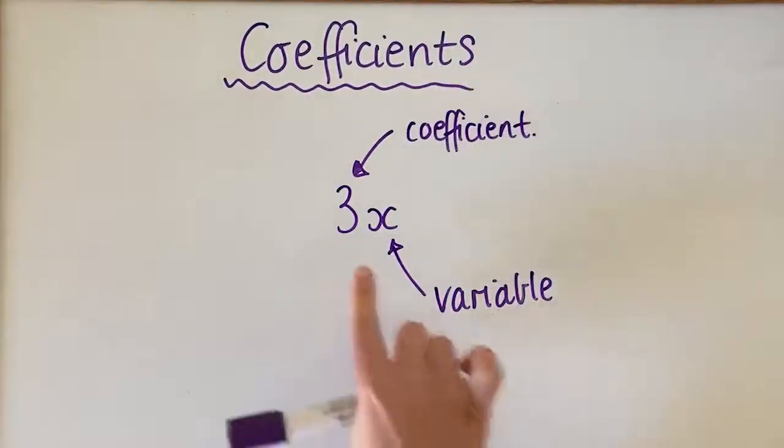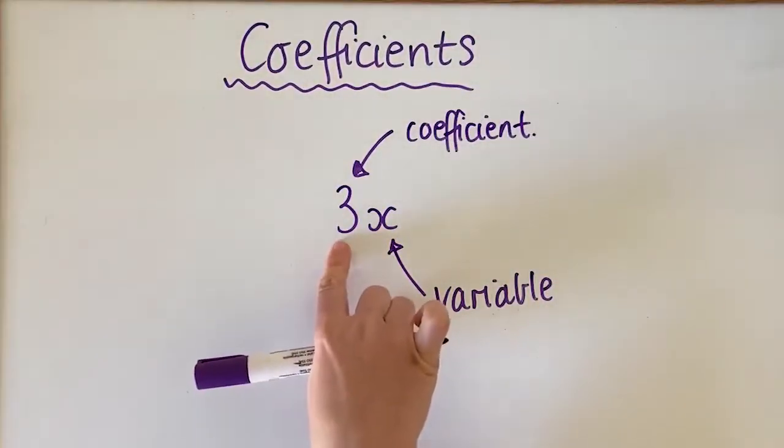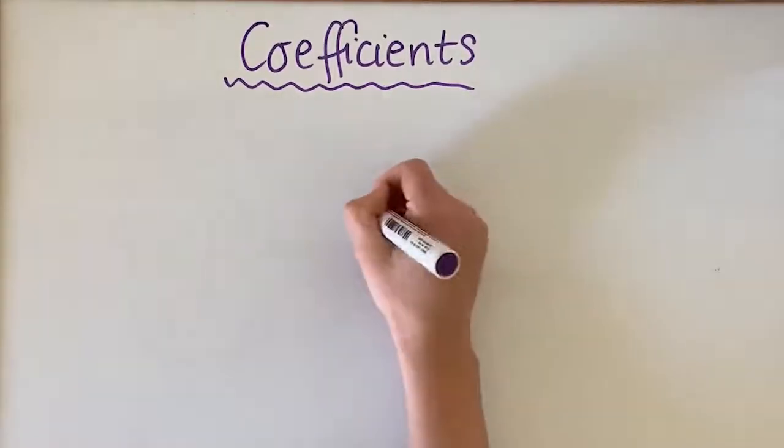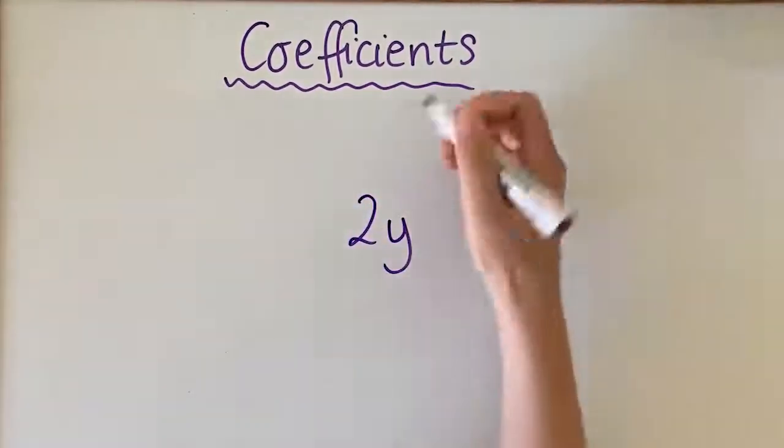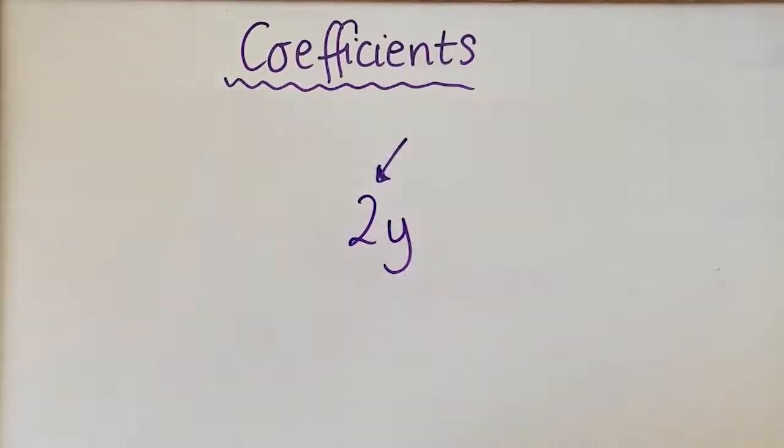So in this example the coefficient is 3. In this example the coefficient would be 2 and the variable would be y.